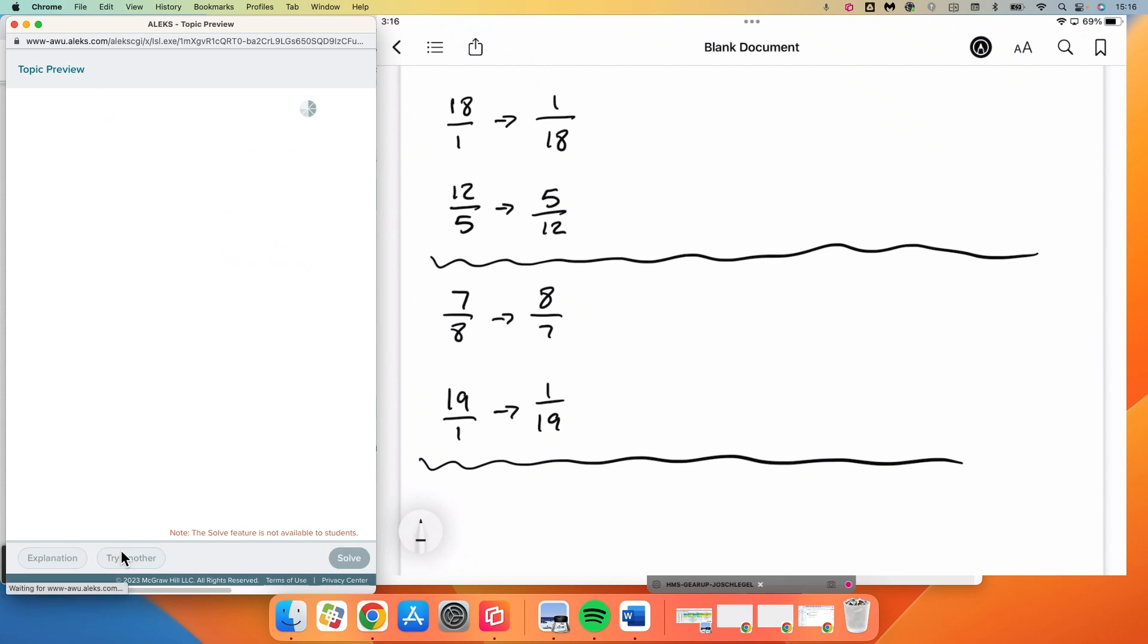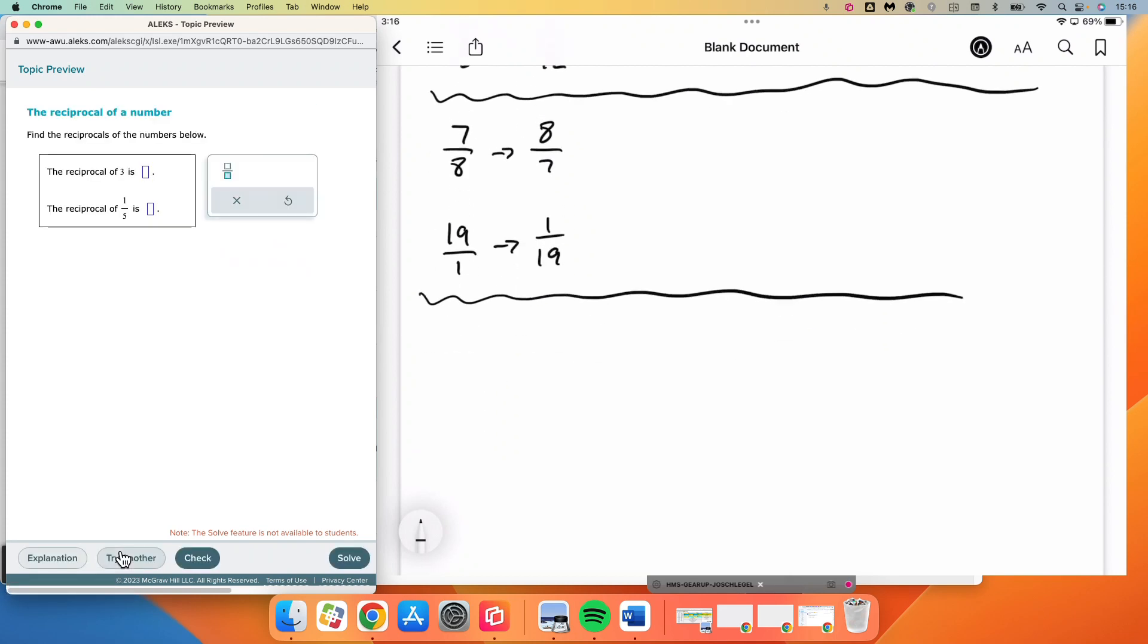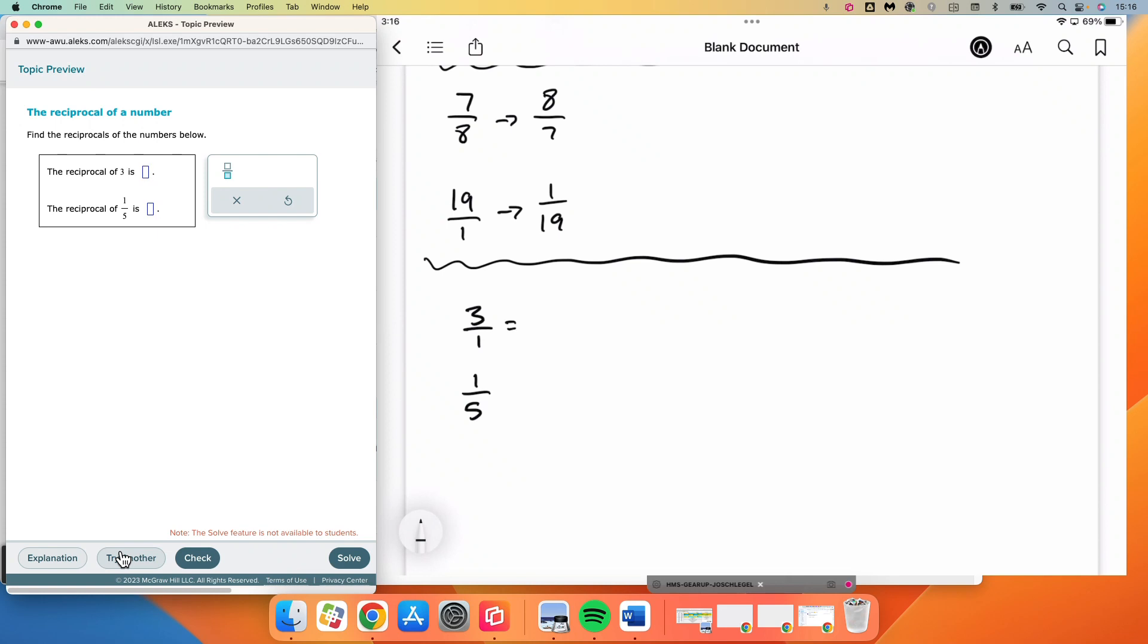Okay, one more. Reciprocal of 3 and reciprocal of 1 fifth. 3 is equivalent to 3 over 1. Flipping that over, we get 1 third.